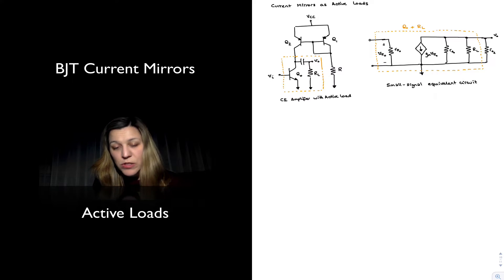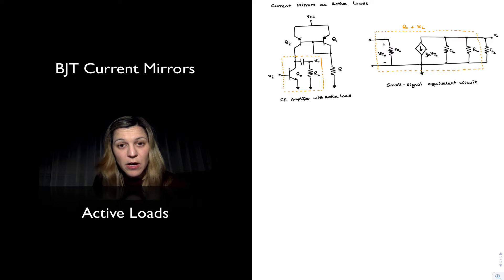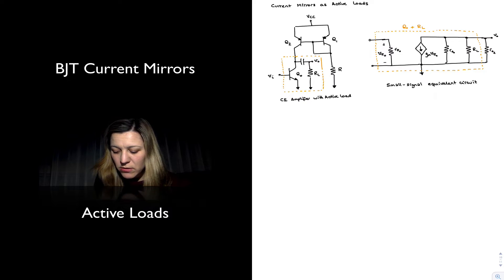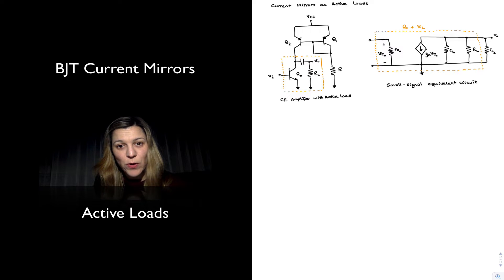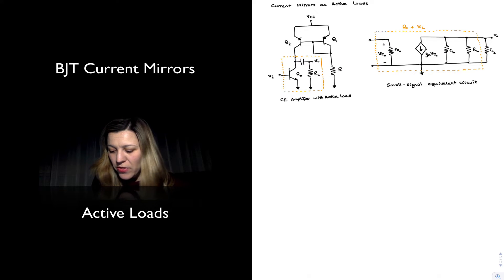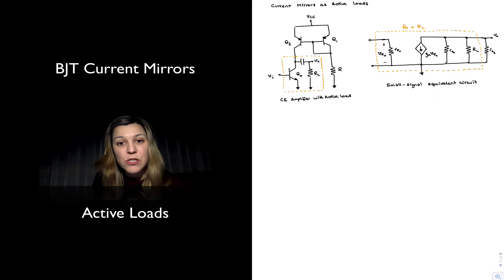I have drawn the small signal equivalent circuit. Notice the coupling capacitor has disappeared because it behaves as a short in the small signal equivalent circuit. I have represented the circuitry within the orange square on the left-hand side, also on the right-hand side, which is comprised of transistor Q0 forming the common emitter amplifier as well as the load resistance. Connected in parallel with the load resistance will be r_o2, which is the output resistance looking into the collector of transistor Q2.